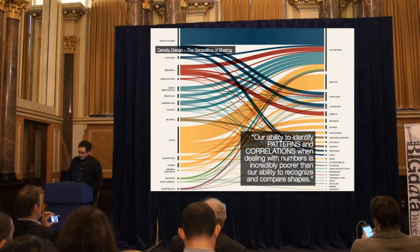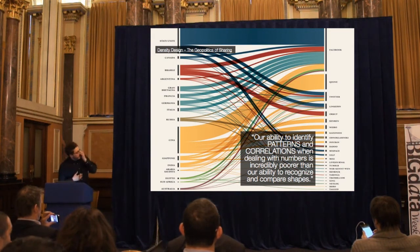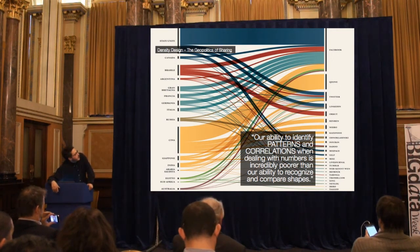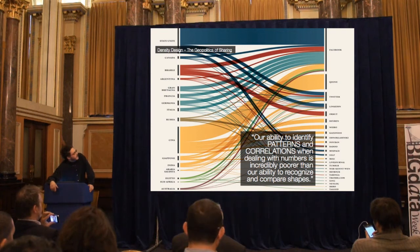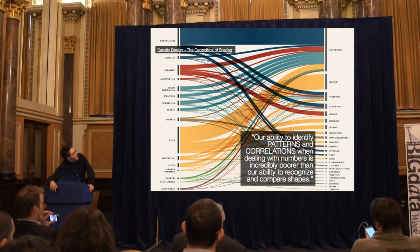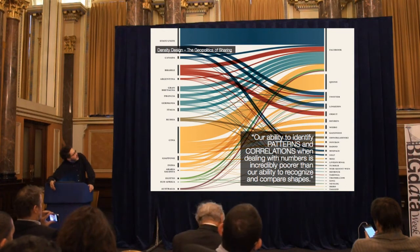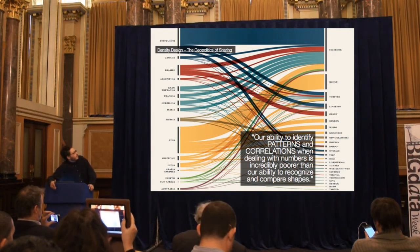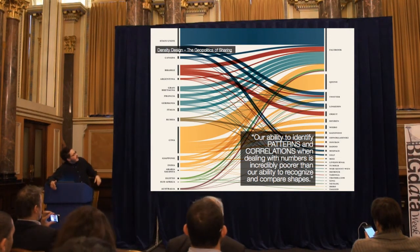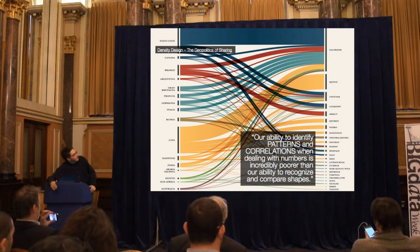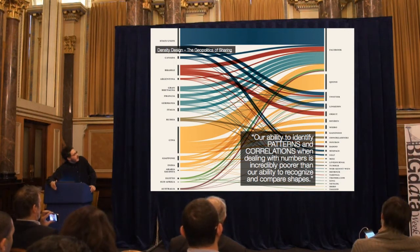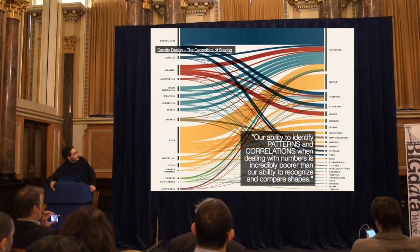Another key element is the ability to identify patterns and correlations. This visualization done for Wired Italy shows how many users by country are using which social network. The number of variables would be completely hard to grasp without this clear visualization using color, shapes, and sizes. This ability to identify patterns and correlations allows us to compare shapes in a much better way than if we were dealing just with numbers.